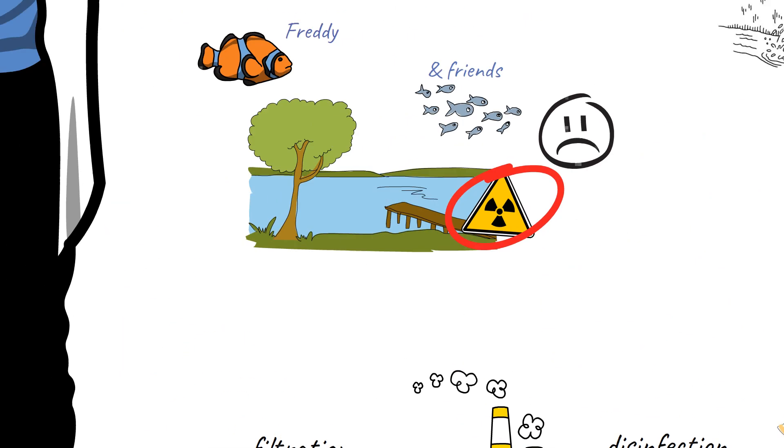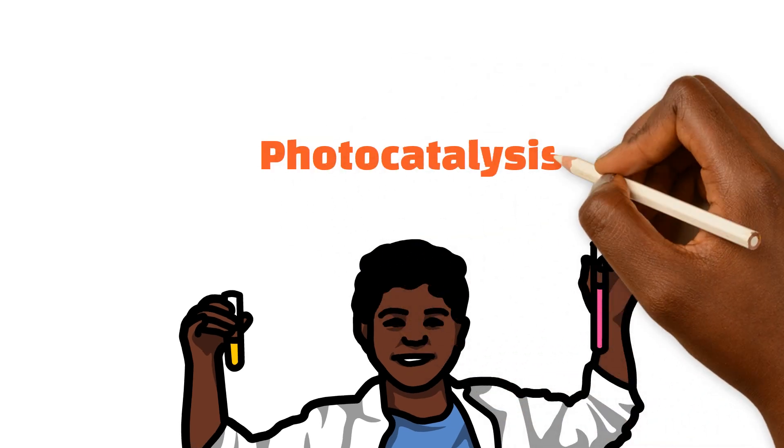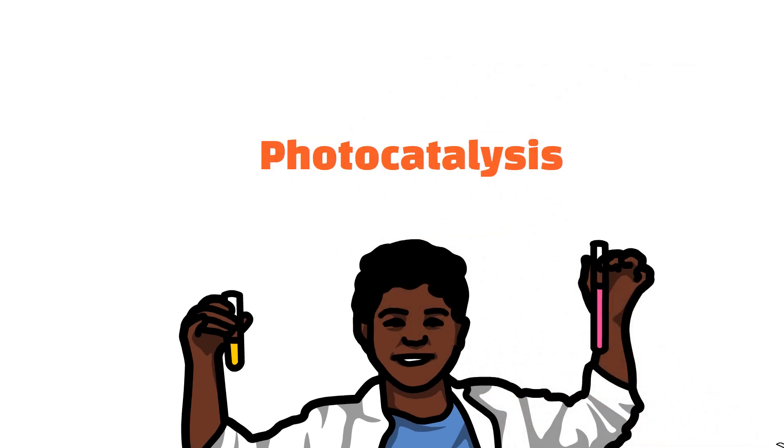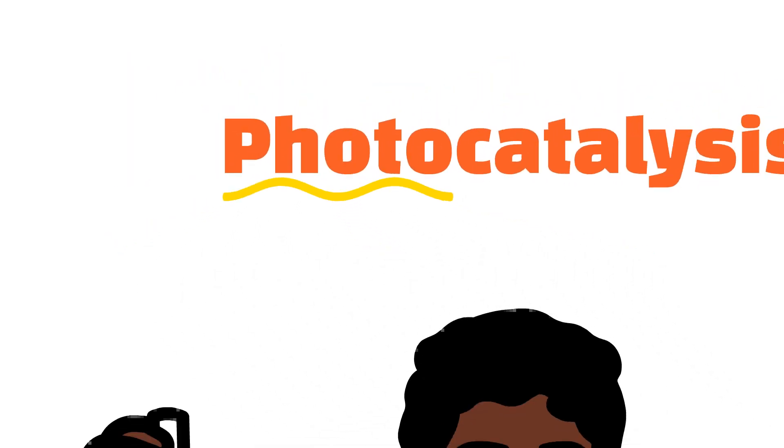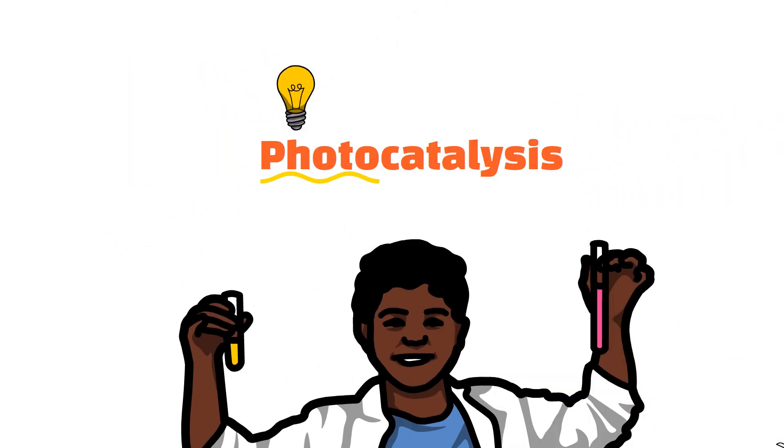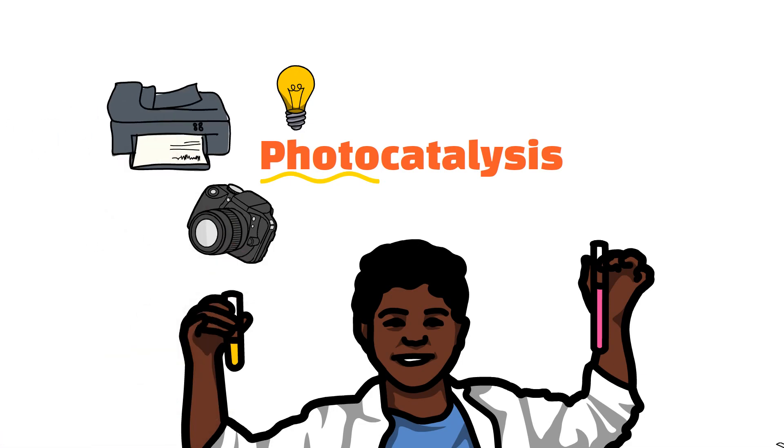This is where some cool chemistry can come in. In my lab, I use a technique called photocatalysis. There are two parts to this word. The first is photo, which means it involves light, just like when we think of words like photograph or photocopy.